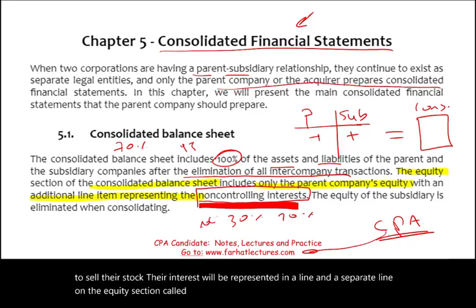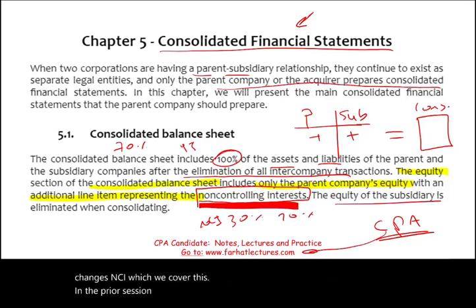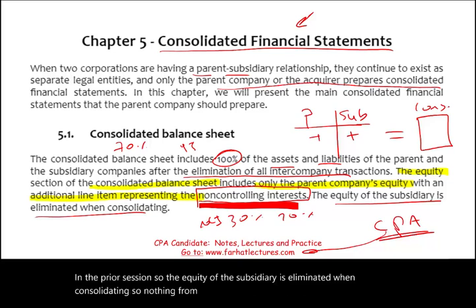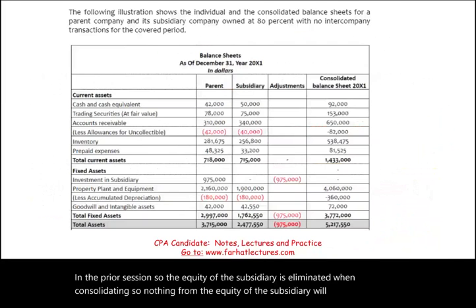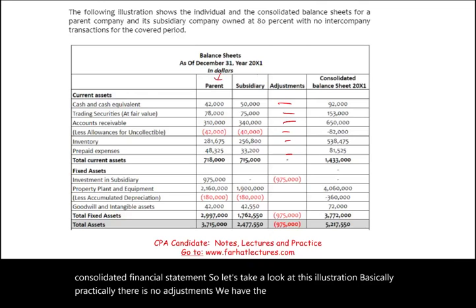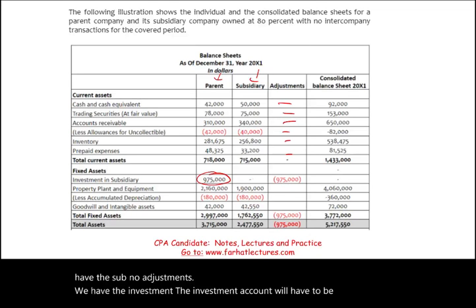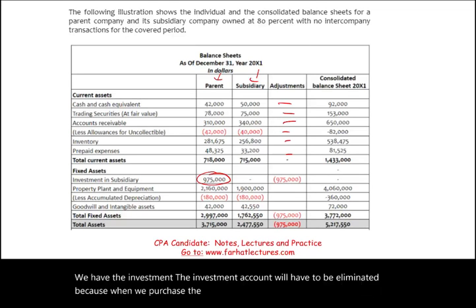The non-controlling interest (NCI), which represents the 30% or 20% that did not sell their stock, is reported as a separate line in the equity section — called non-controlling interest or NCI, formerly known as minority interest. The equity of the subsidiary is eliminated when consolidating, so nothing from the subsidiary's equity appears on the consolidated financial statements.